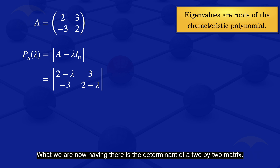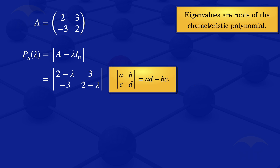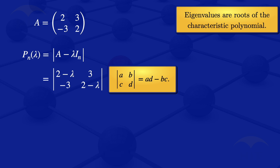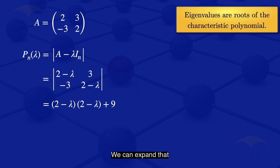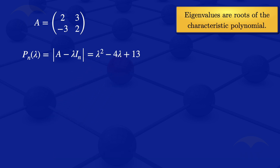What we are now having is the determinant of a 2 by 2 matrix. When we have a 2 by 2 matrix A, B, C, D, the determinant is AD minus BC. So using that formula, our determinant will simplify to (2 minus lambda) multiplied by (2 minus lambda) plus 9. We can expand that and it will give us lambda squared minus 4 lambda plus 13. So the characteristic polynomial is lambda squared minus 4 lambda plus 13.